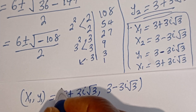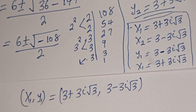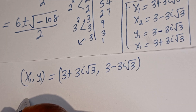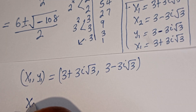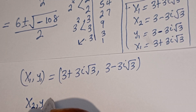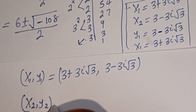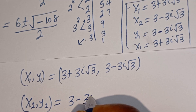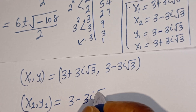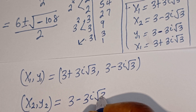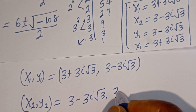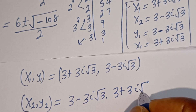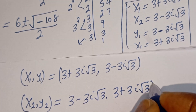So the solution pairs are: S1 comma Y1 is equal to 3 plus 3i root 3, comma, 3 minus 3i root 3. And S2 comma Y2 is equal to 3 minus 3i root 3, comma, 3 plus 3i root 3.